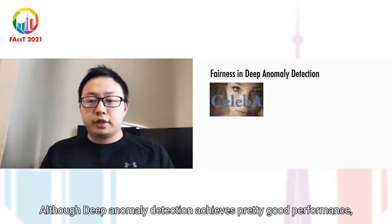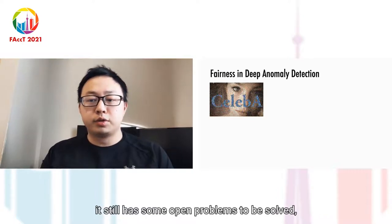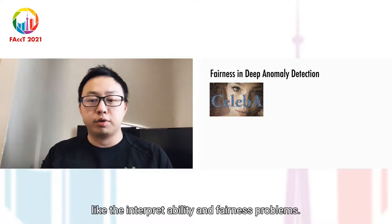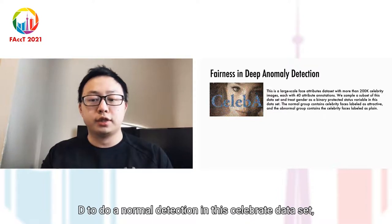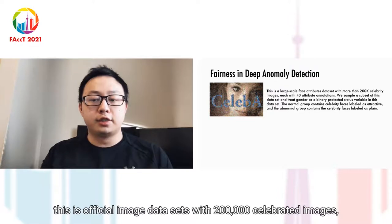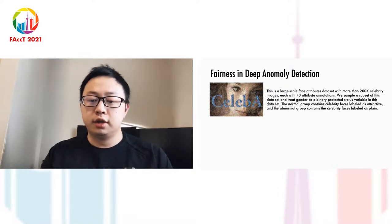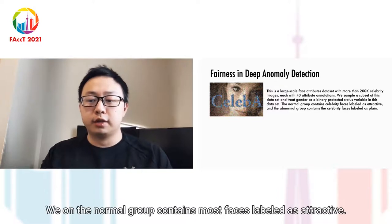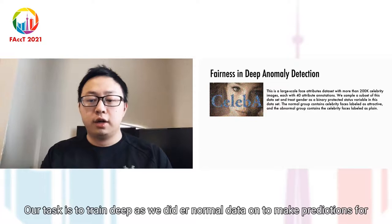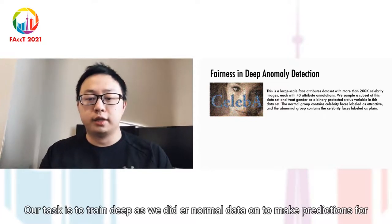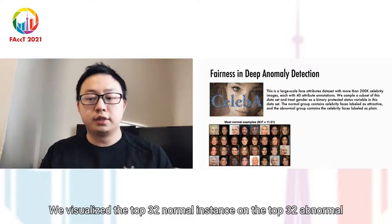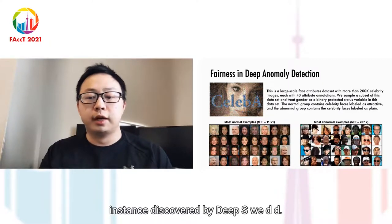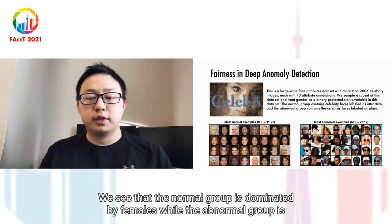Although deep anomaly detection achieves good performance, it still has some open problems like interpretability and fairness. Here is one example using deep SVDD on the CELEB-A dataset, a facial image dataset with 200,000 celebrity images. We treat gender as the PSV, and the normal group contains most faces labeled as attractive. We visualize the top 32 normal and top 32 abnormal instances discovered by deep SVDD. We see that the normal group is dominated by females, while the abnormal group is dominated by males.